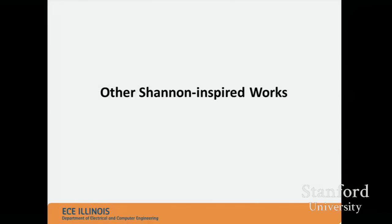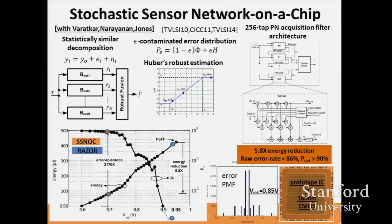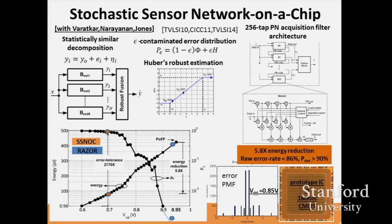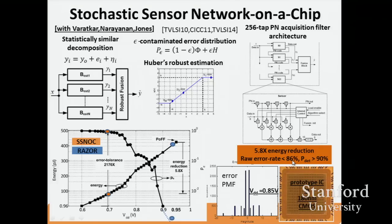There are other Shannon-inspired works I want to mention. One is stochastic sensor network on a chip, SSNOC — also a journey from systems to architectures to circuits. The technique replaces a computation with a bunch of estimators. Each estimator alone cannot give you the required performance, but they are designed to create errors in an uncorrelated fashion. You fuse their outputs to get the final high-quality output. This was a 256-tap PN acquisition filter implemented in 180 nanometer, achieving significant energy savings while handling raw error rates in the tens of percentage points — about 86% error.